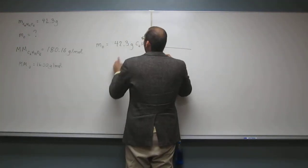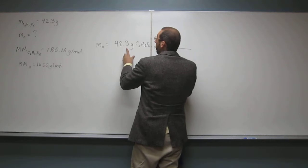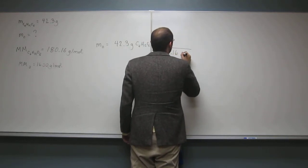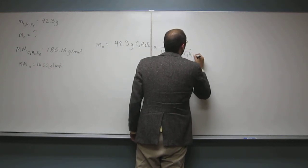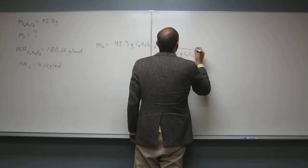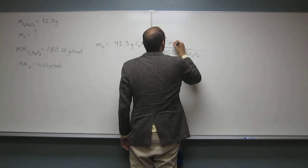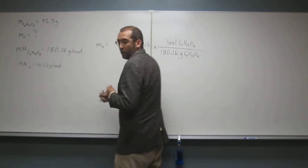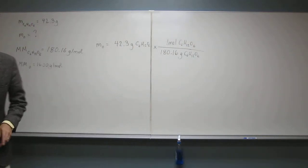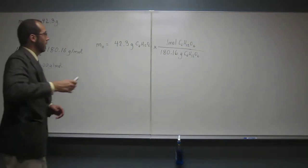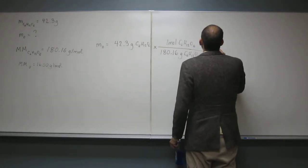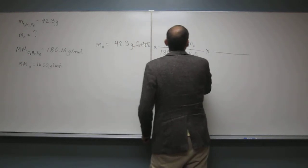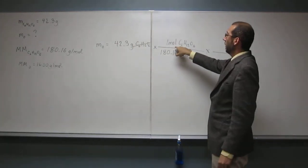And here, we got the molar mass, so remember, we want to get rid of grams, so we're going to put that at the bottom, 180.16 grams of C6H12O6. And then, so when we do that, cancel, cancel like that, now we're in moles of C6H12O6.